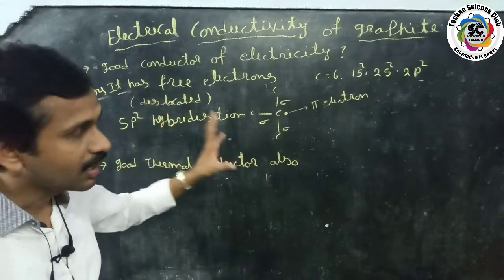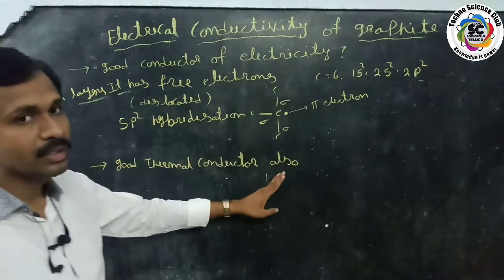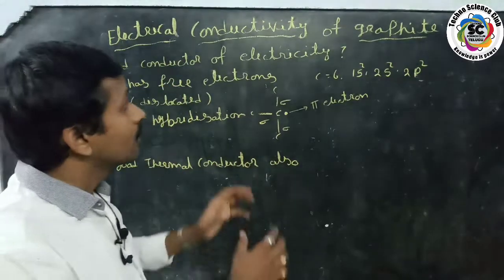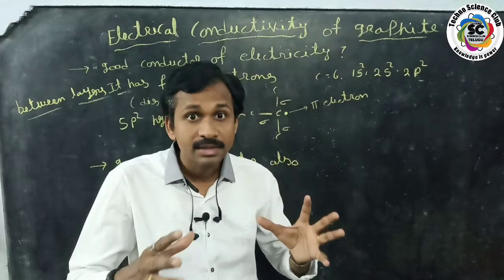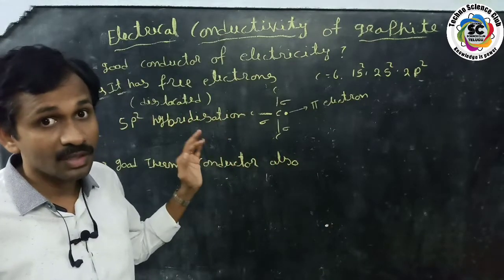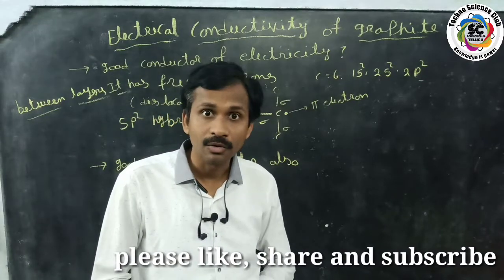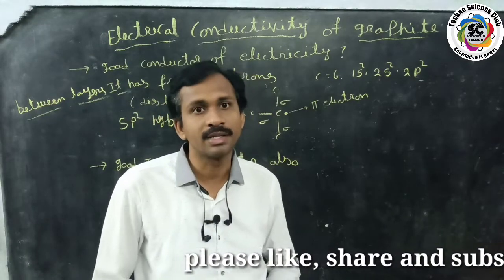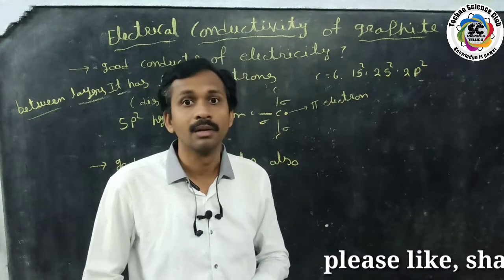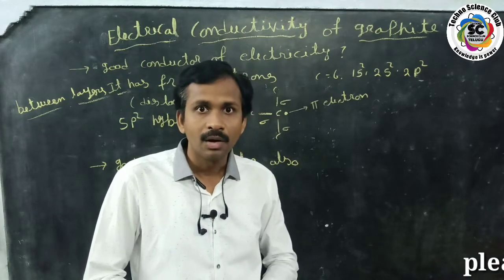These free electrons also make graphite thermally conductive. So graphite has delocalized free electrons in between its layers, and because of these free electrons, graphite behaves as an electrically conductive material.